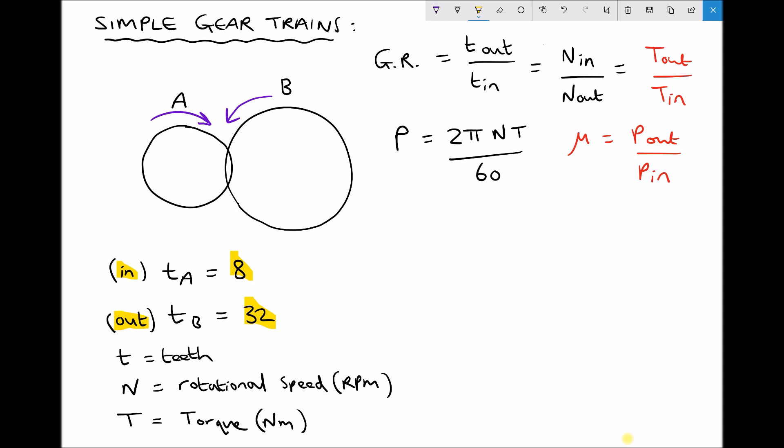Now the reason why the number of teeth on each of these gears is important is because it's going to affect how quickly each of those gears turn in relation to each other. Hopefully you can see from the diagram that we're going to need to turn gear A more than once in order to get one full revolution of gear B, and we'll have a look at how that ratio can be calculated in a moment.